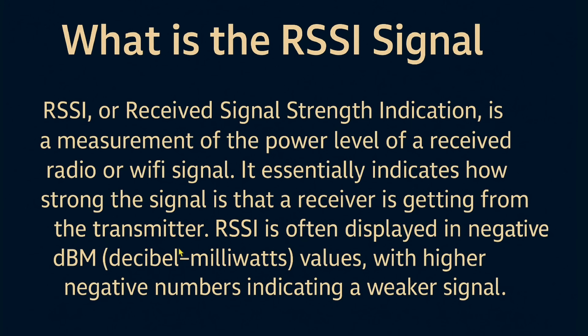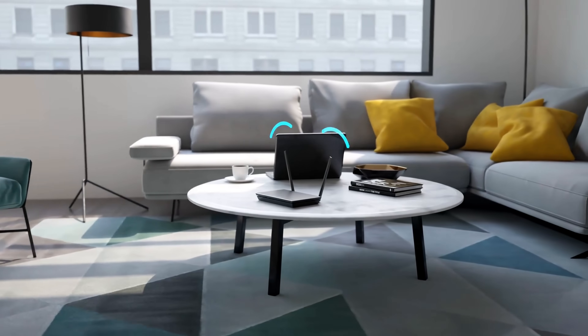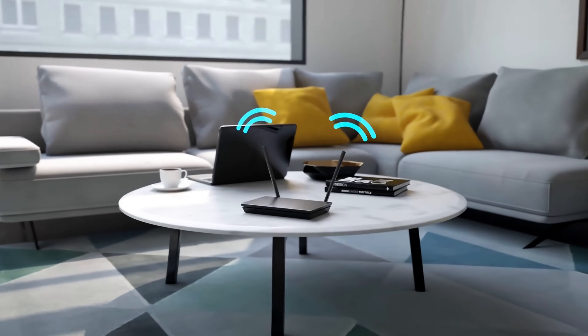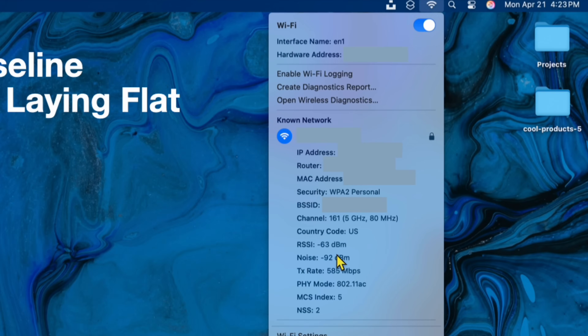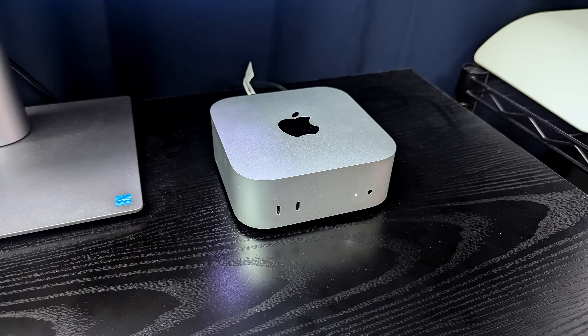RSSI is displayed in negative decibel-milliwatt values, with higher negative numbers indicating a weaker signal. It basically tells you how strong the signal coming from the router to your computer is. That number will change if you shut a door, open a door, or based on the type of walls the signal is passing through. Our baseline is negative 63.